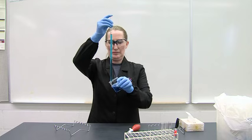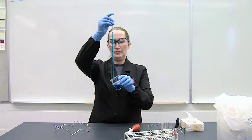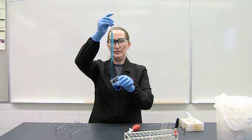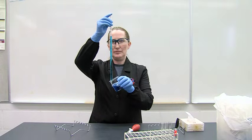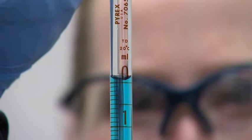Raise the calibration line to eye level. Slightly release pressure from the index finger, allowing the liquid to flow at a slow and steady rate. Press down firmly with the index finger when the bottom of the meniscus is sitting on the calibration line.